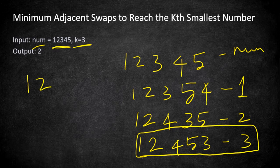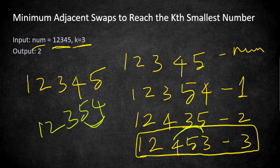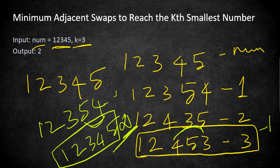The given number is 12345 and the third wonderful number is 12453. If we swap 4 and 3 it becomes 12354, and then swapping 5 and 4 gives us 12453. So we did two swaps total to reach this target, and that is our output.